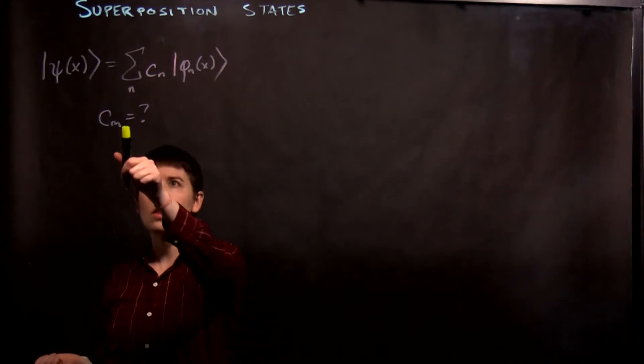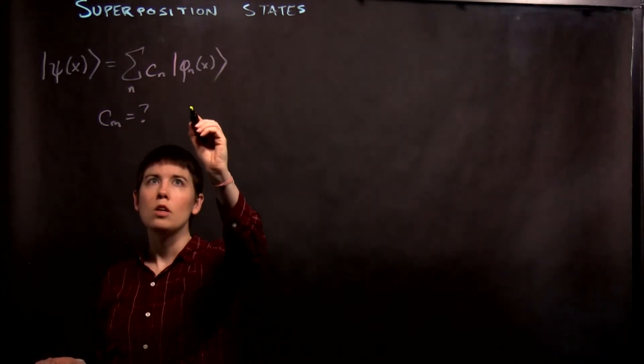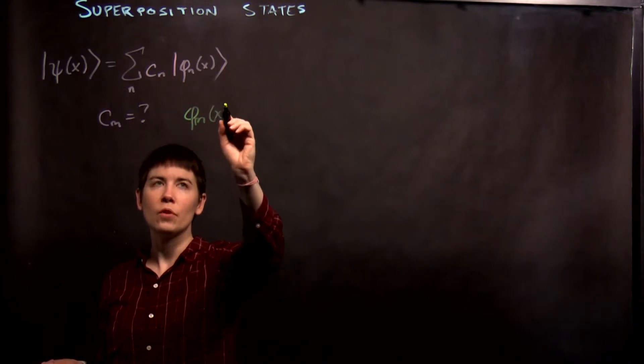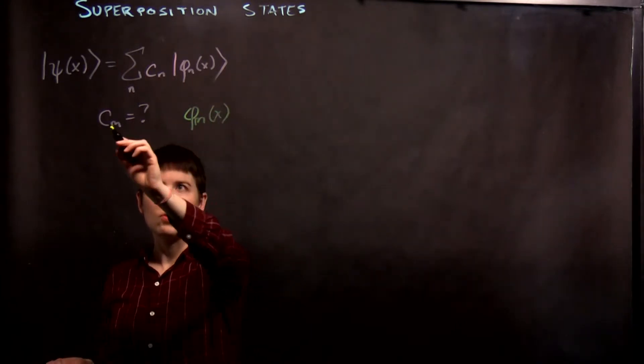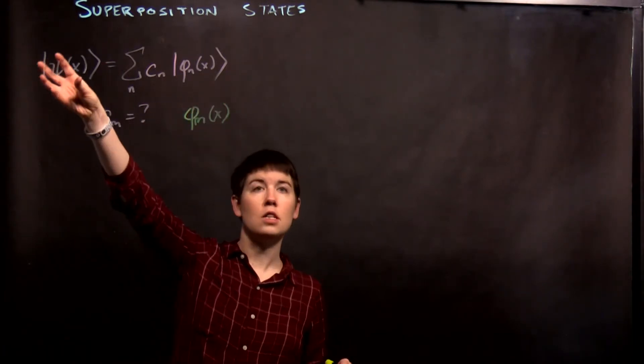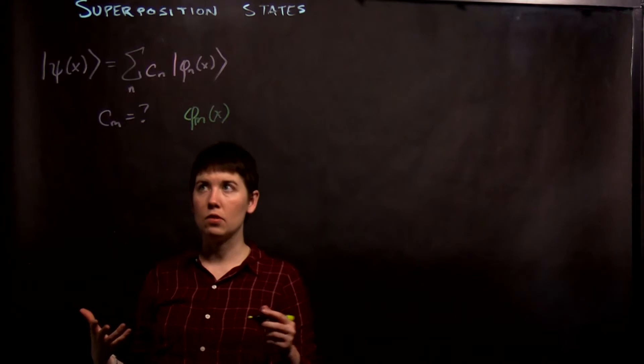So well, one way to do this is knowing that this c sub m is going to relate to phi sub m, right? So this gives you how much of this energy eigenstate is in our general eigenstate.